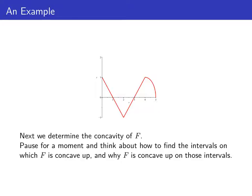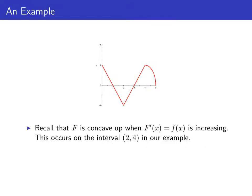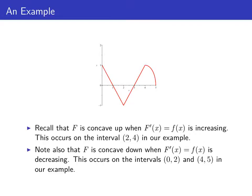Next, let's think about the concavity of big F. Recall that big F is concave up when the first derivative — the graph of little f — is increasing, and this occurs on the interval from 2 to 4. Big F is concave down when the derivative, little f, is decreasing. In this example, that's on the intervals from 0 to 2 and from 4 to 5.